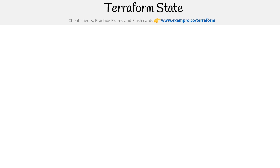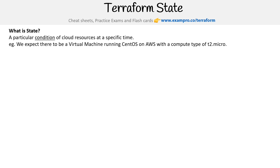This is Andrew Brown from ExamPro, and we are taking a look at Terraform state. So what is state? It's a particular condition of cloud resources at a specific time. For example, imagine we expect to have a virtual machine running CentOS on AWS with a compute type of t2.micro — that would be the state that we are expecting.